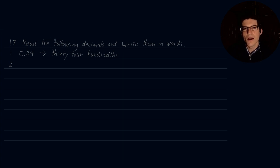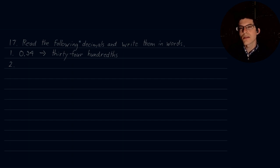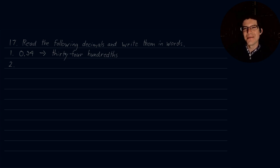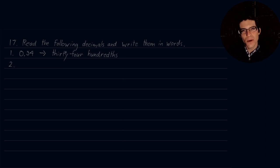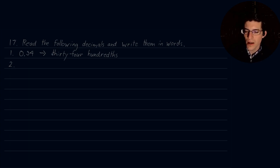Then you have ten-thousandths, hundred-thousandths — and that would be your next thousandths period as well. It's a little tricky, but you can see there's a bit of overlap there. With that in mind, we'll carry on and just do the translations.